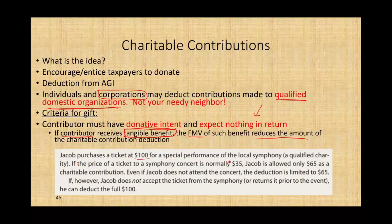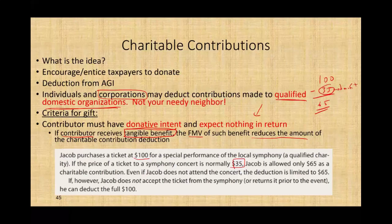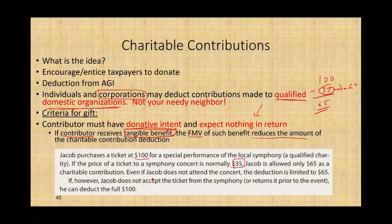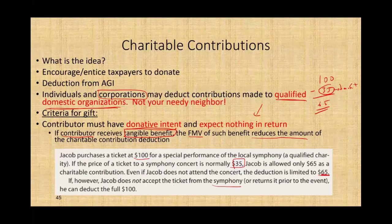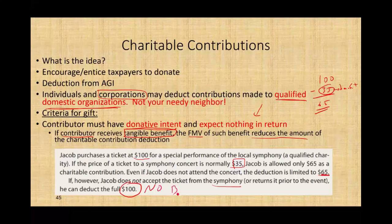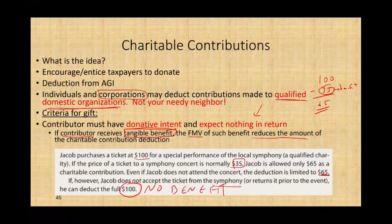Jacob purchased a ticket for $100 at a special performance of a local symphony, which is a qualified charity. If the price of a ticket at the symphony is normally $35, you paid $100 but normally you can buy it for $35 — you got a benefit of $35. Your charitable deduction is only $65. Even if Jacob does not attend, you only still deduct $65. However, if Jacob does not accept the ticket from the symphony — say you paid $100 but told them you're not attending and to keep the ticket — then you have a full $100 deduction because you received no benefit. But if you accept the ticket, whether you use it or give it to someone else, it reduces your contribution by $35.